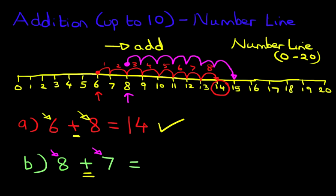Let's bring this right down here. We've taken 7 jumps. 1, 2, 3, 4, 5, 6, 7. So we've got 7 jumps. What number did we land on? We landed on number 15. 8 plus 7 is 15.